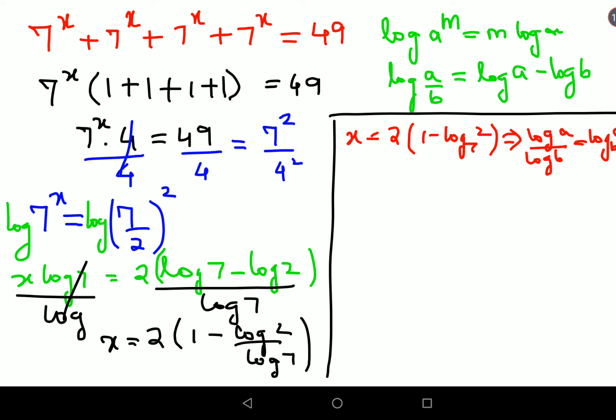So this is one way of writing. But if they have given us the log table, then let's try and put down the value. So we will say x = 2(1 - log(2)/log(7)), where log(2) value is 0.301.